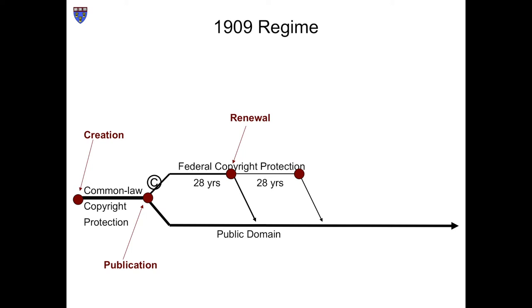The slide in front of you should by now be familiar. This shows the way things worked under the original version of the 1909 copyright statute. As we've seen, the first term of federal protection lasted for 28 years after the date of publication. If the copyright was properly renewed, it lasted for another 28-year term, commonly known for obvious reasons as the renewal term.